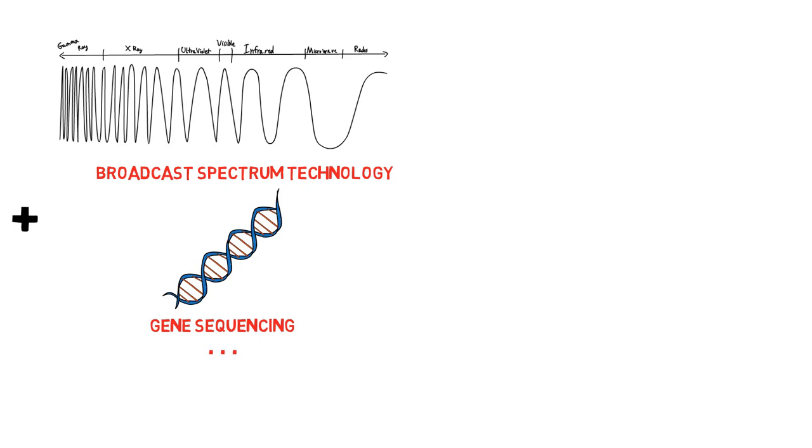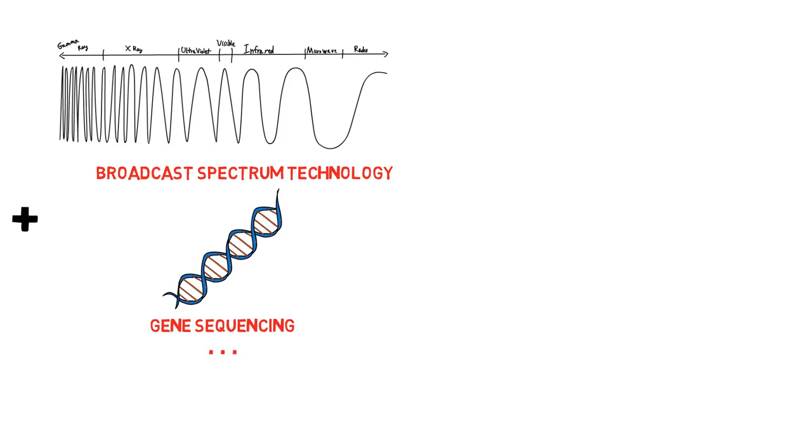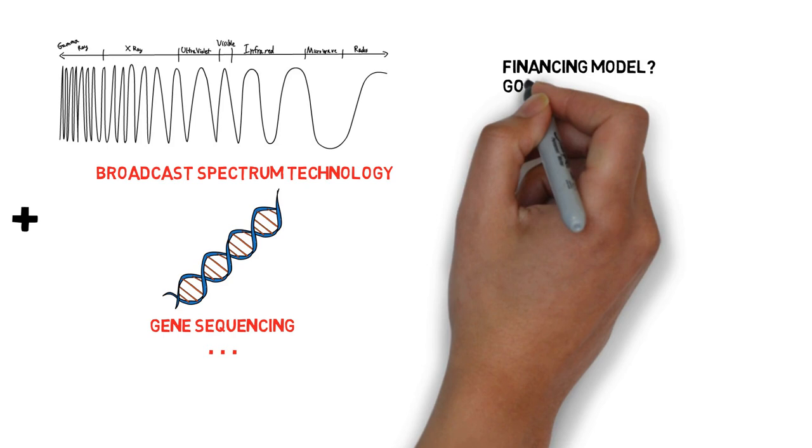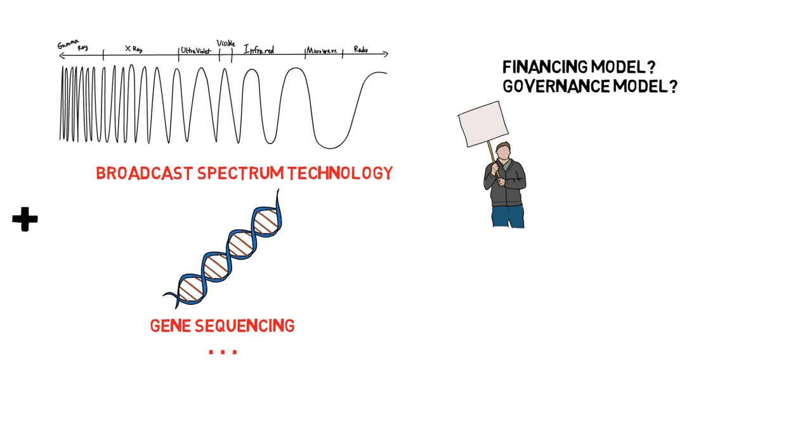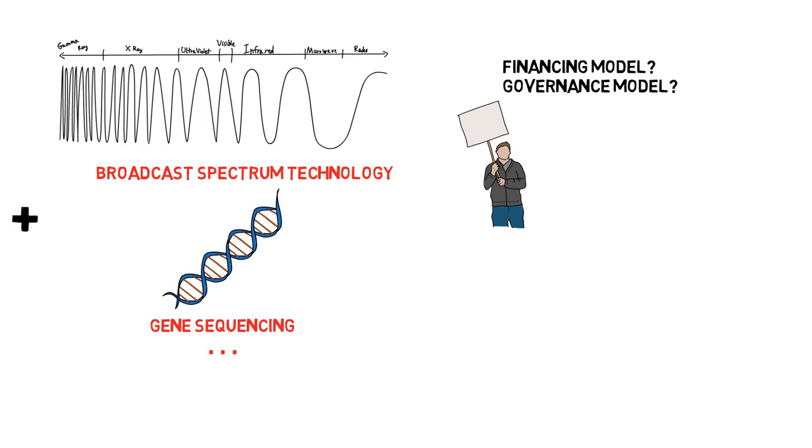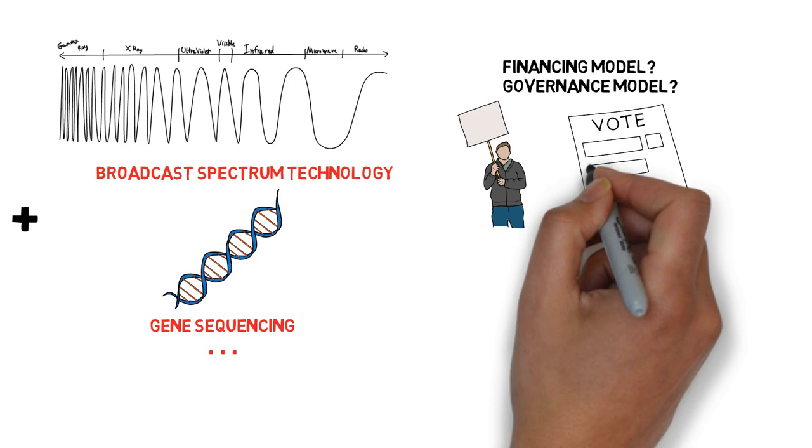While the marginal cost controversy isn't exactly new, it's only now that the questions of finding a financing model and a governance model for this new economy have become one of the most important political issues facing us. Because these decisions are going to determine our collective social, economic and political life for the rest of the century, and can either help or forever hinder the transition to the collaboratist era.